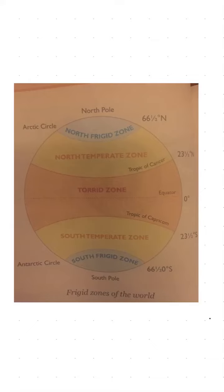Now let's talk about the climate. The tundra is a cold and treeless place — it is cold through all months of the year. Summer is a brief period of milder climate when the sun shines almost 24 hours a day.